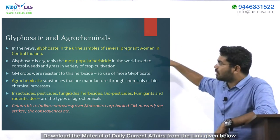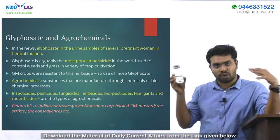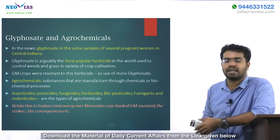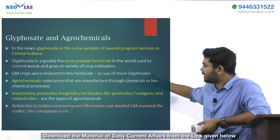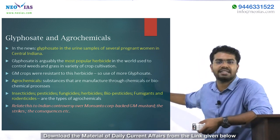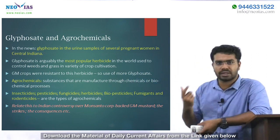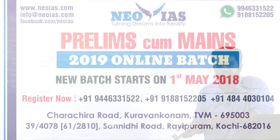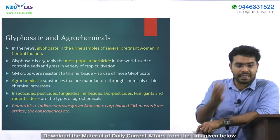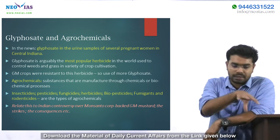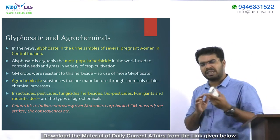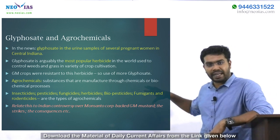Agrochemicals are chemicals used in agriculture — including insecticides, pesticides, fungicides, herbicides, biopesticides, fumigants, and rodenticides. Learn two or three examples from each category. Relate this to India's controversy over Monsanto Corp, which introduced GM mustard. Environmentalists protested that GM mustard could cause imbalance in crop cycles. The issue has been debated for about two years, and GM mustard has not yet been released in India.